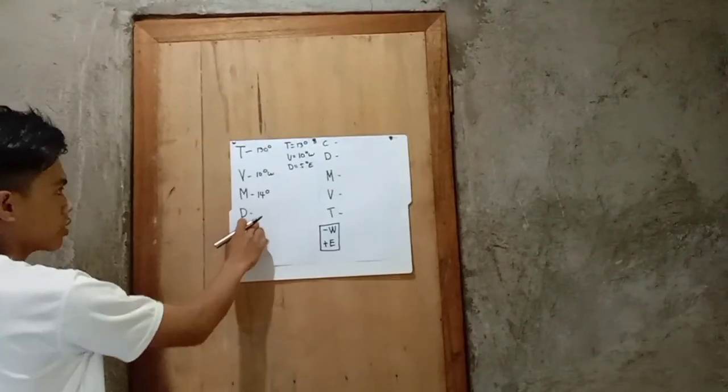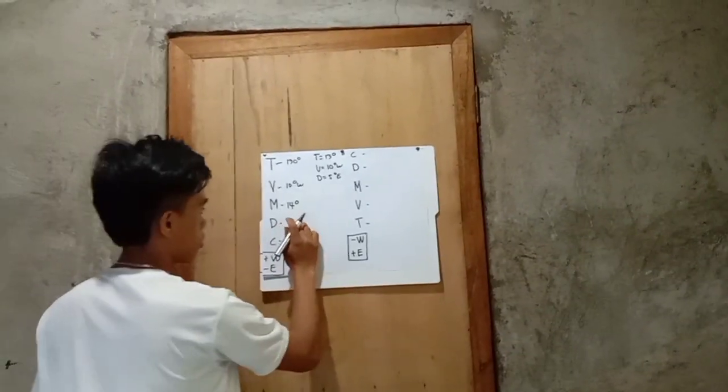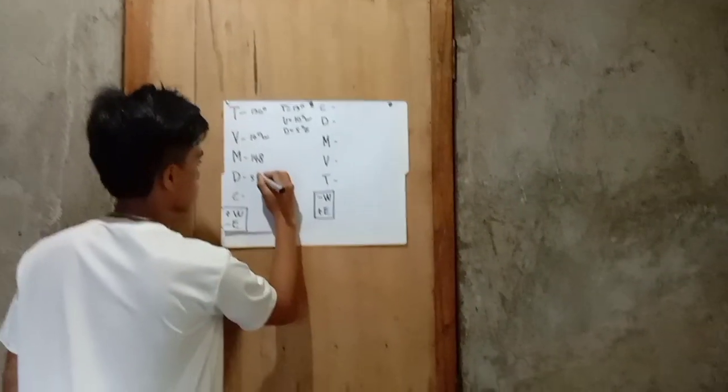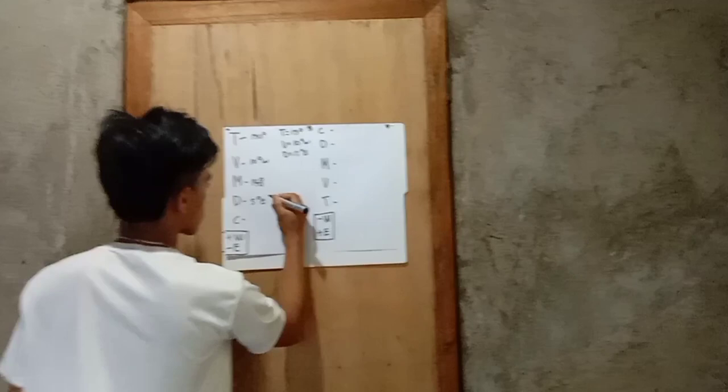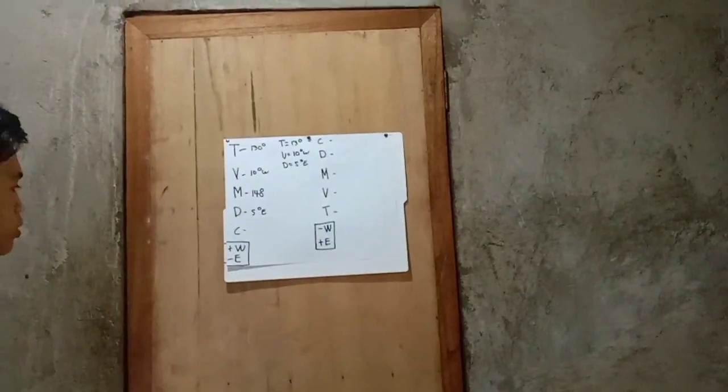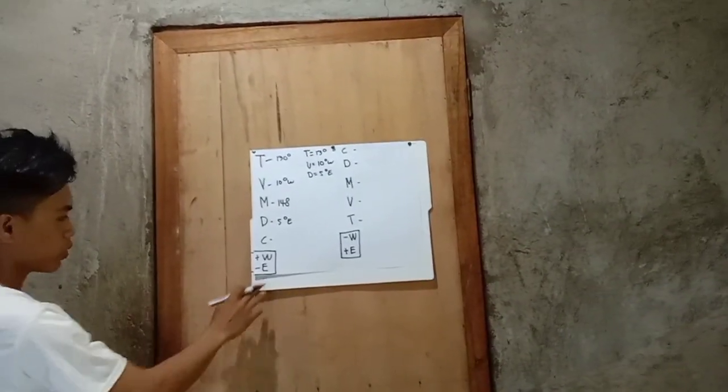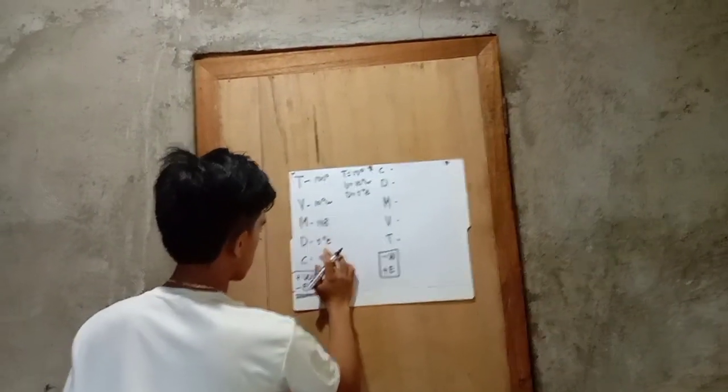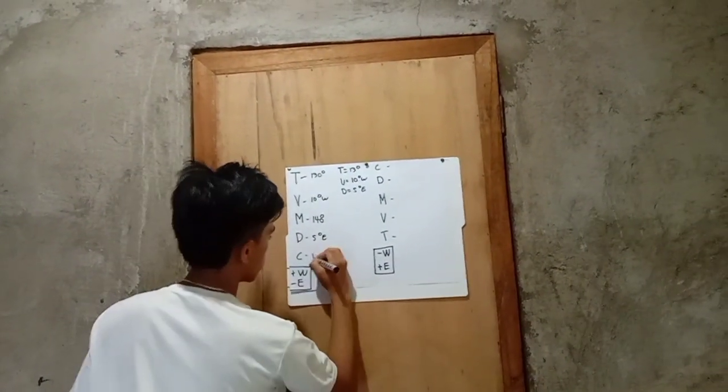So, the deviation is 5 degrees. Okay, we must copy this. So, we will apply the golden rule, which is subtract. 140 degrees minus 5 degrees equals 135 degrees.